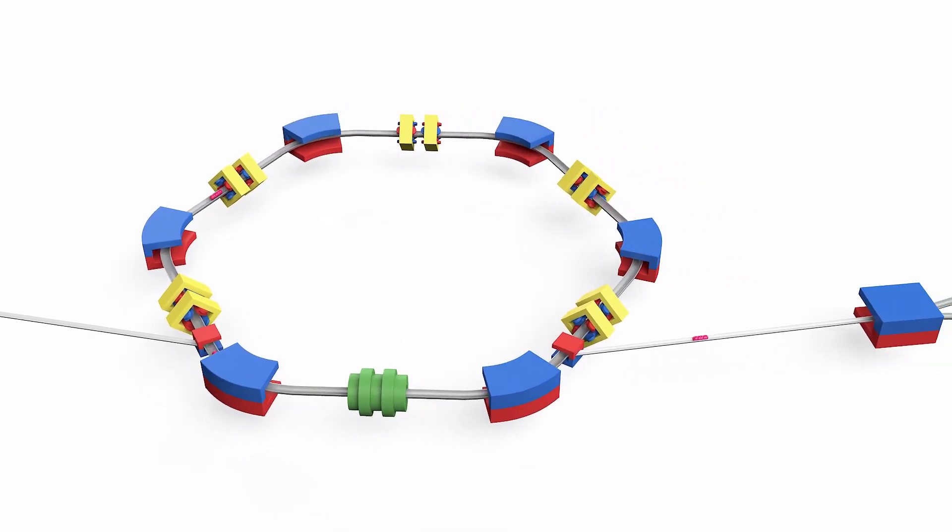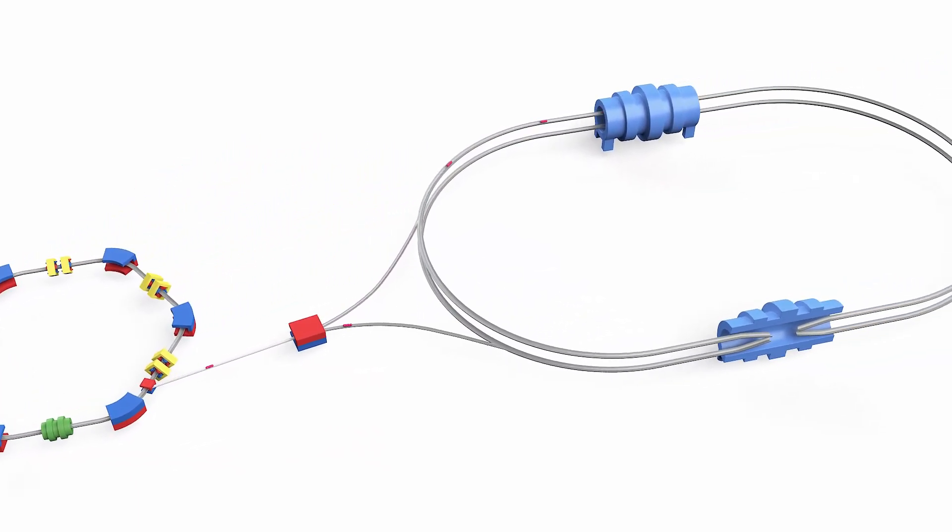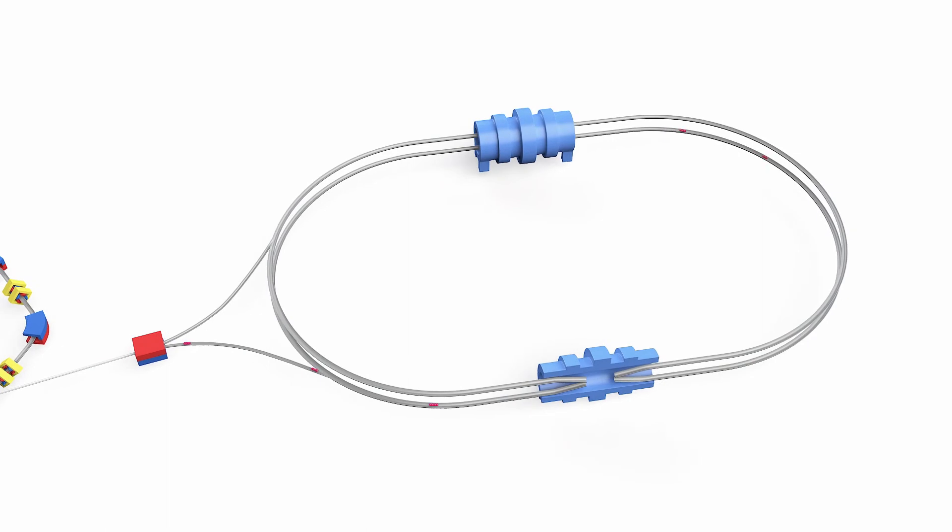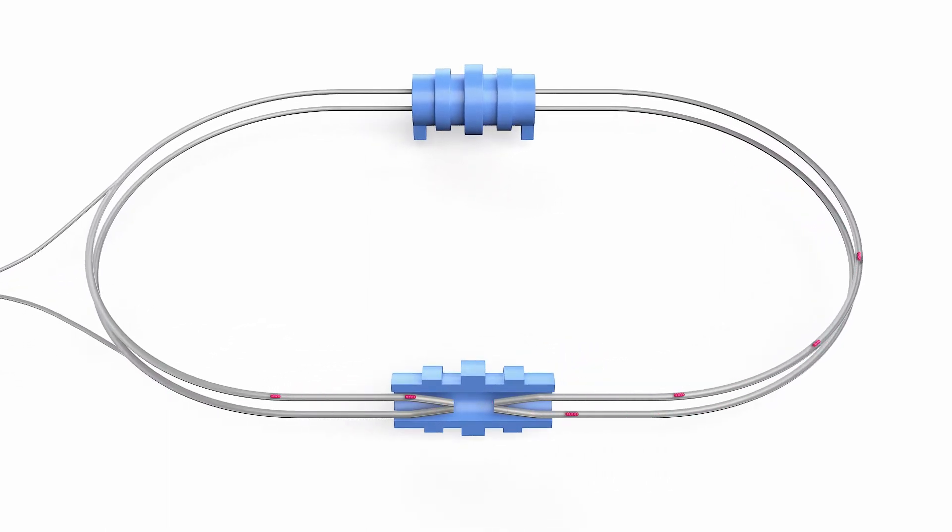In order to use the energy of accelerated particles to the maximum, they are divided into two beams moving in opposite directions. When the particles meet, they collide head-on, and at the point of their collision, all the energy accumulated during acceleration is released.